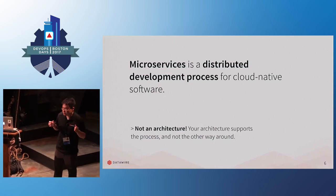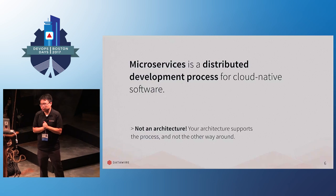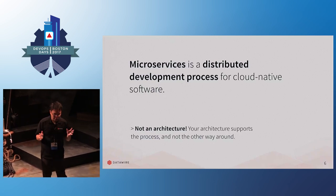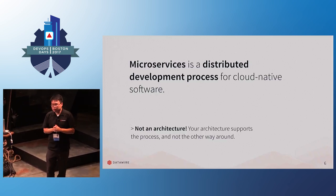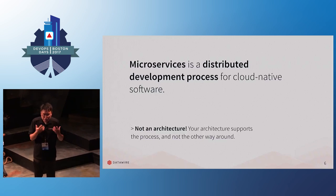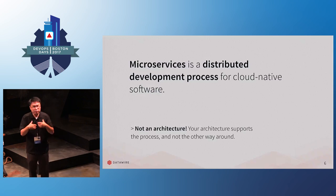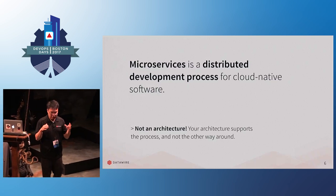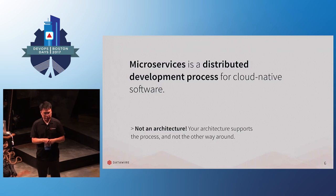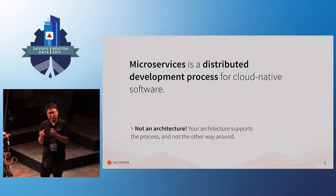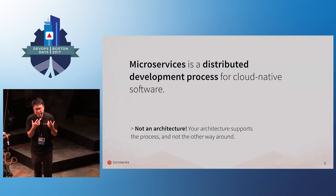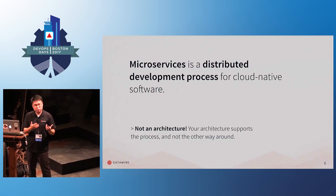The definition I like to use for microservices is that it's a distributed development process for cloud-native software. A lot of people say microservices architecture, but I don't really like that framing because it implies that's where you need to start. Your architecture should actually support your process, not the other way around. Think about how you'd like to do development, then figure out an architecture to support that. We try to turn organizations around and say: how do you actually think about your workflow? Because that's what you're trying to do — make development faster — and that starts with your workflow, not your architecture.